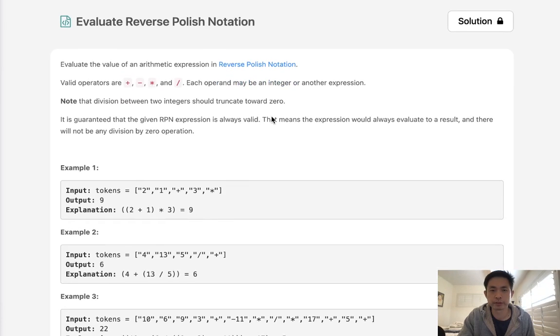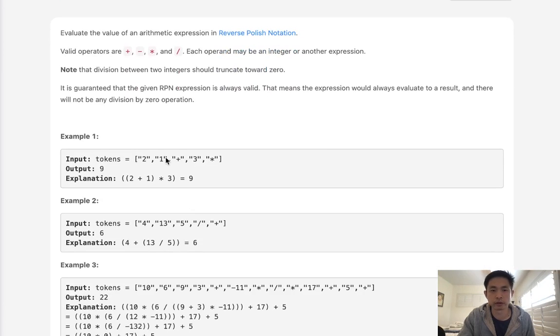So what is reverse Polish notation? It's the first time I've heard of this as well, but you can look at the Wikipedia if you want to learn more about it. Essentially, what we're going to do is take these numbers in order, and whenever we see an operation, we're going to take the last two values and perform that operation as if it was inside of a parentheses, and then continue that algorithm onward.